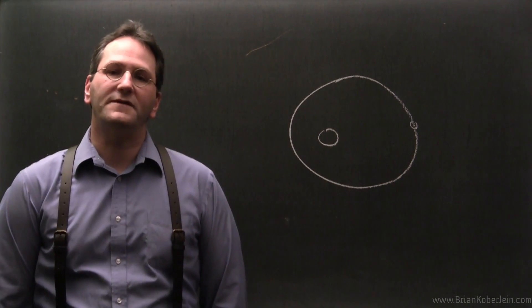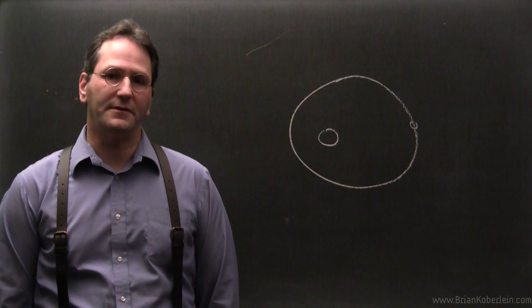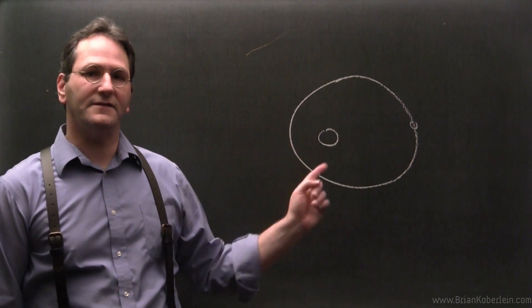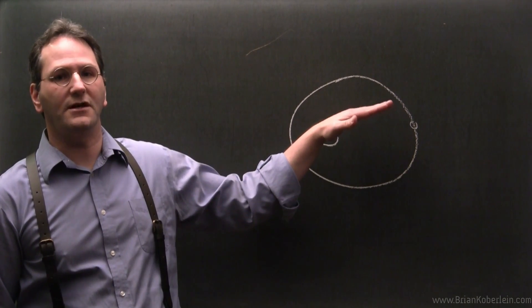And what Le Verrier found was that the orbit of Mercury was doing something rather interesting. Instead of staying in a perfect ellipse like this, it would actually shift slightly over time.